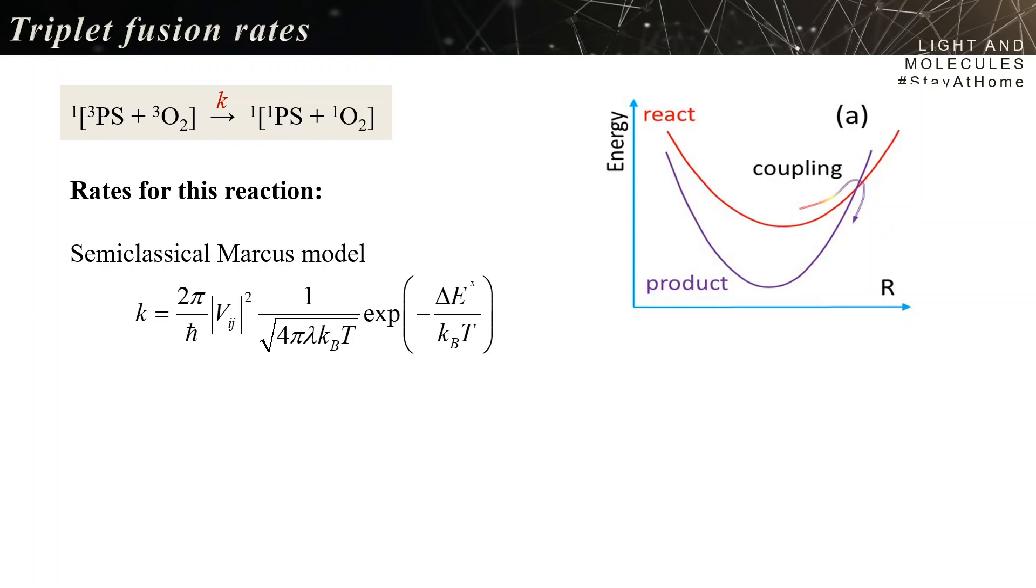Again, you have parabolic states that are coupled, but now instead of being a triplet to a singlet, you have two singlet states of the complex, and then it's an internal conversion process.